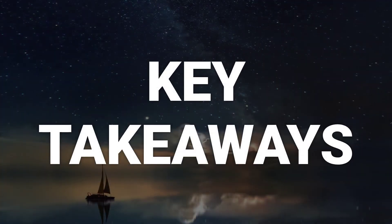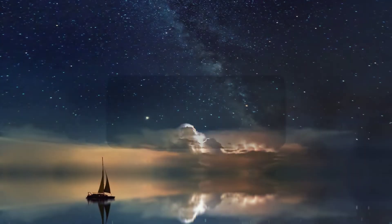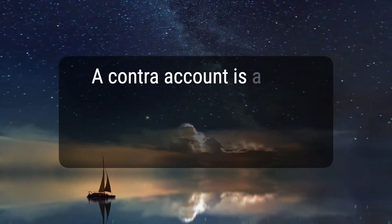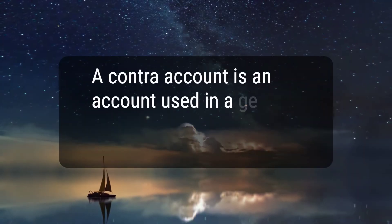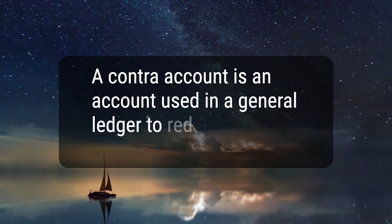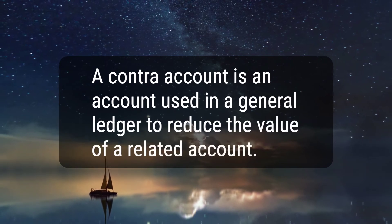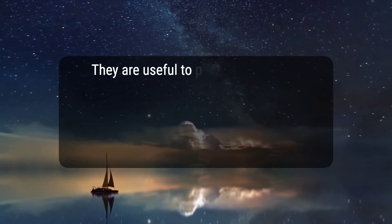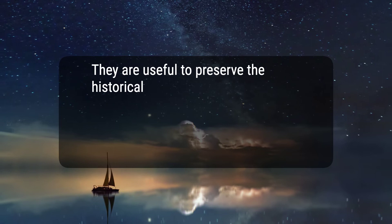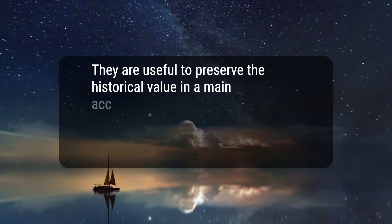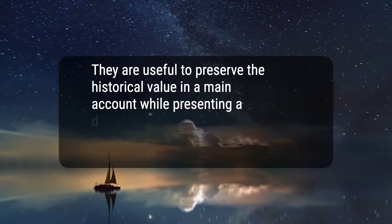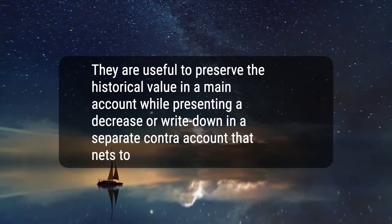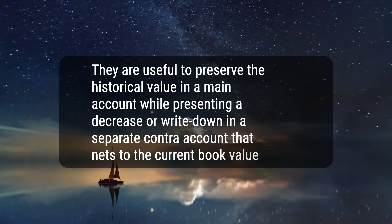Here are five key takeaways. 1. A Contra Account is an account used in a general ledger to reduce the value of a related account. 2. They are useful to preserve the historical value in a main account while presenting a decrease or write-down in a separate Contra Account that nets to the current book value.